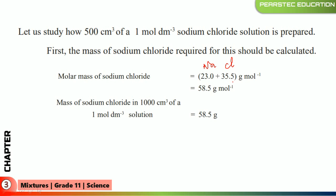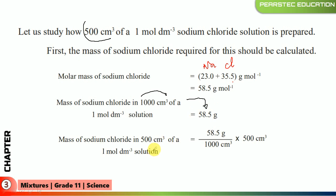58.5 grams per mole is the molar mass for 1000 cubic centimeters of a 1 mol per cubic decimeter solution. For 500 cubic centimeters: 58.5 grams ÷ 1000 cm³ × 500 cm³ = 29.25 grams. So 58.5 divided by 2 gives us 29.25 grams.